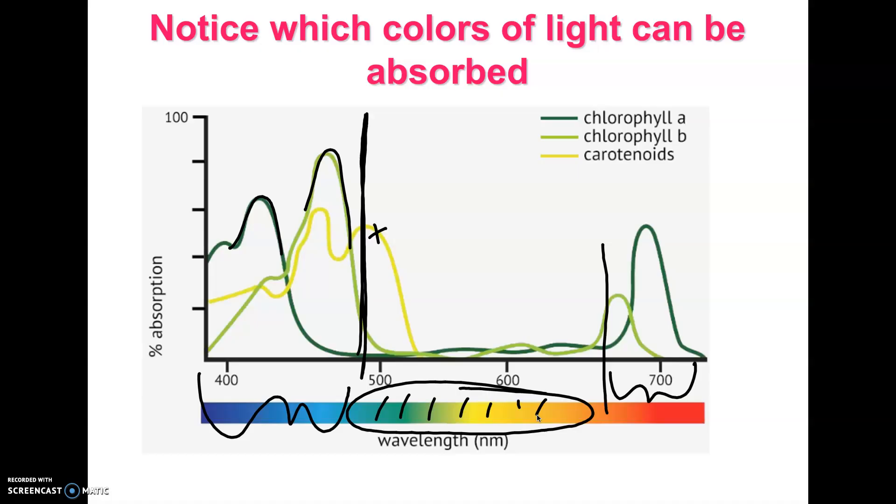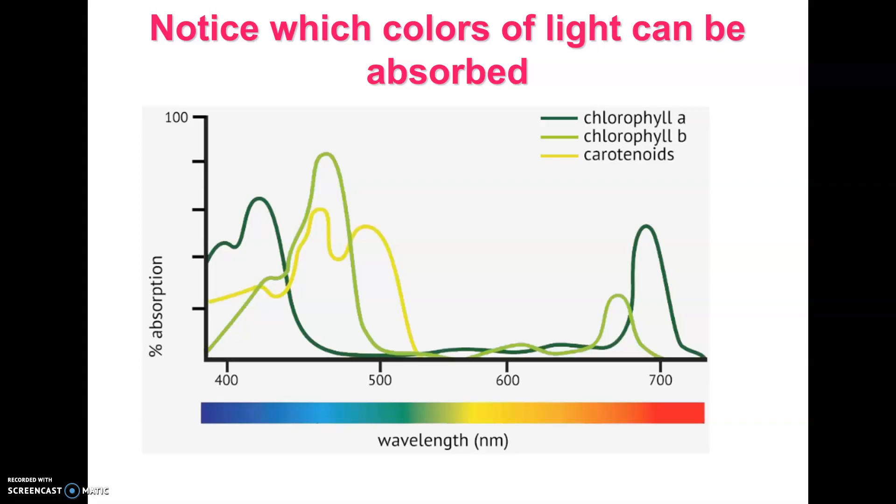And the colors here, the blues and yellows, would reflect back to us as green. That's what we would see. And that would also mean that if you were to try to grow a plant in green light, it would die. It would be the same as keeping it in the dark.